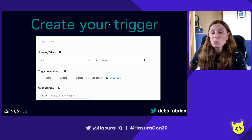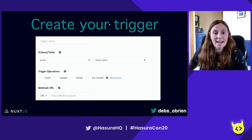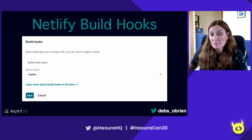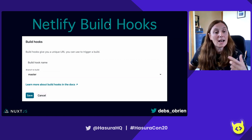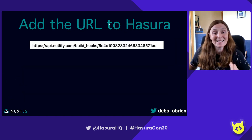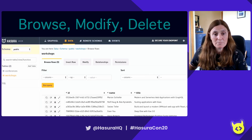Then you add in the webhook URL. The URL you add here is what you get from Netlify. In Netlify you go to build hooks and create a new hook - let's call it 'Hasura update table' - use your master branch and press save. That gives you a URL, which you then paste into the Hasura webhook URL field. And that's all set up. Now if you browse, modify, or delete anything in the table, it will call that trigger.